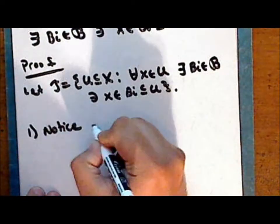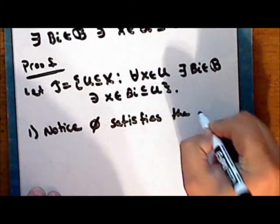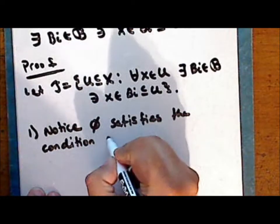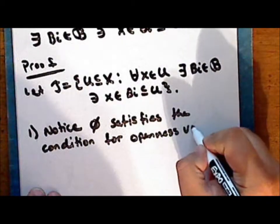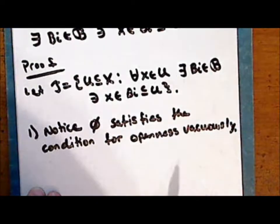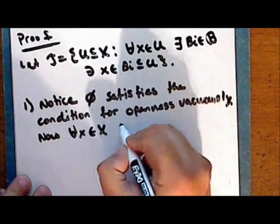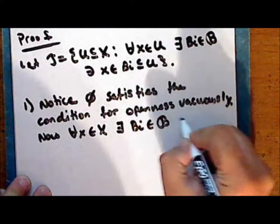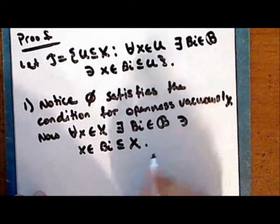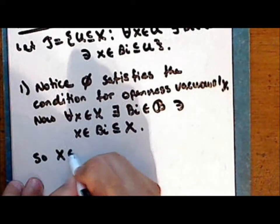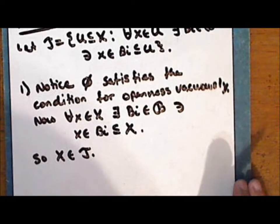Notice that the empty set satisfies the condition for openness vacuously. Now for every point in the entire space X, there exists at least one element in script B such that that point is in the element B_i, which is a subset of X. So the entire set is in τ, and both the empty set and the entire set are in the collection τ.